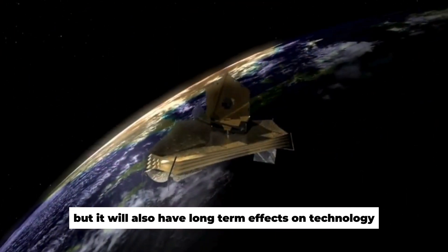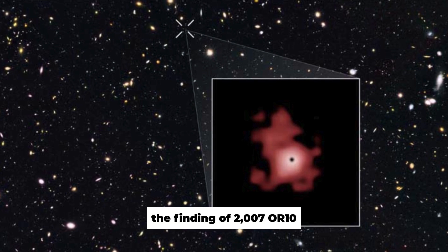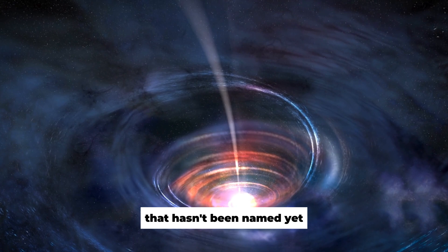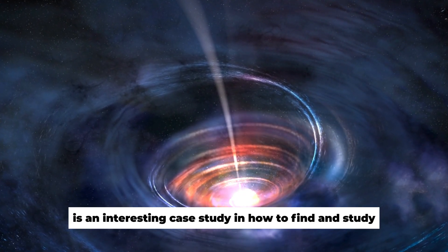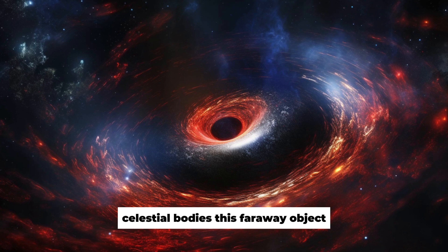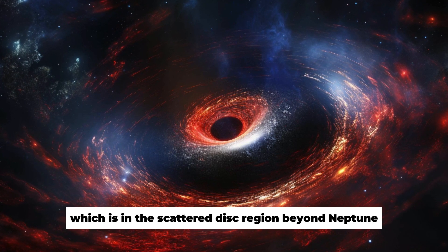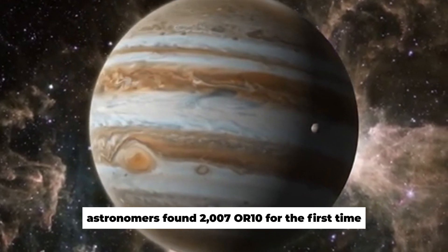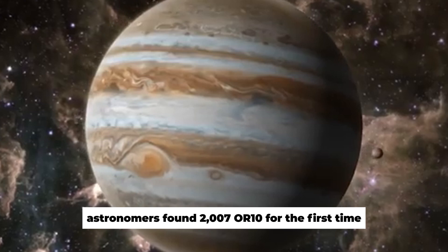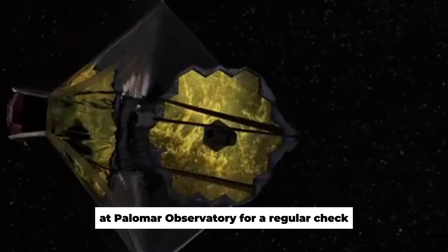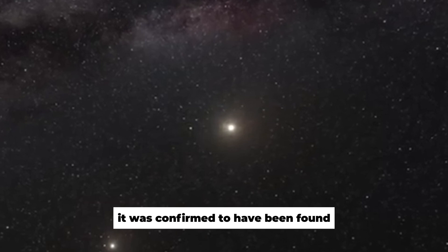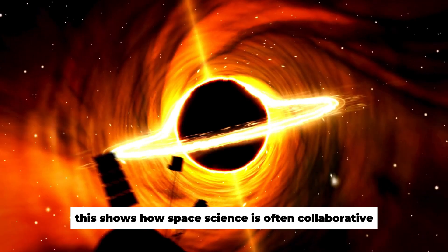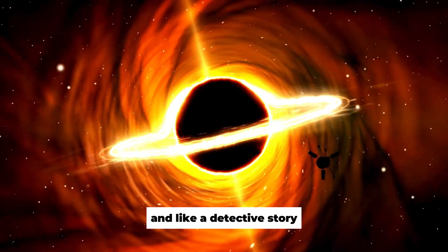The discovery of 2007 OR10, the largest world in our solar system that hasn't been named yet, is an interesting case study in how to find and study celestial bodies. This faraway object, which is in the scattered disk region beyond Neptune, gives astronomers both new tasks and chances. Astronomers found 2007 OR10 for the first time while using the Samuel Oschin Telescope at Palomar Observatory for a routine check. It was confirmed by looking at pre-discovery pictures made by the Spacewatch project. This shows how space science is often collaborative and like a detective story.